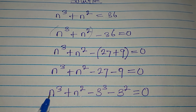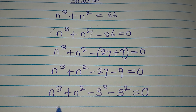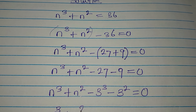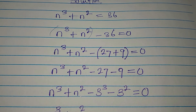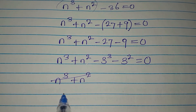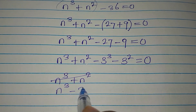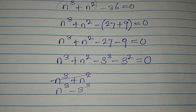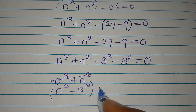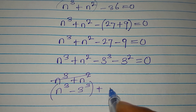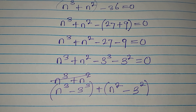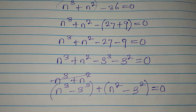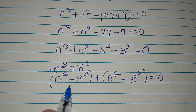What we are going to do is rearrange so that like terms come together. We'll have n to the power of 3 minus 3 to the power of 3 together, then plus n squared minus 3 squared together, and we equate them to zero. Here we are having difference of two cubes, and here we have difference of two squares.